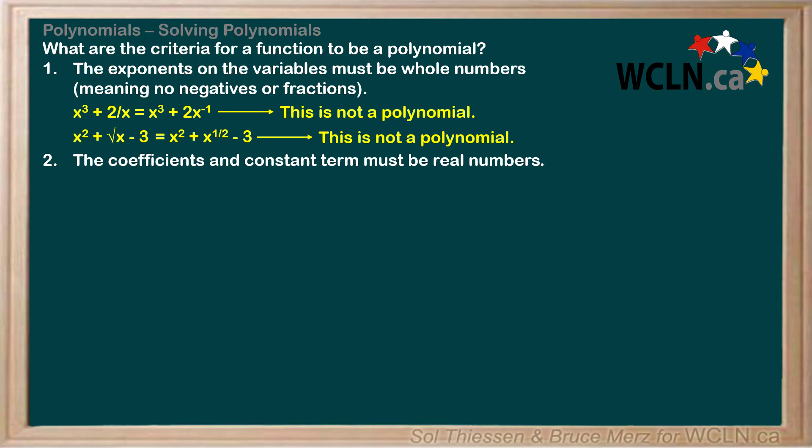The second criterion is that the coefficients and constant term must be real numbers. This just means that we can't have imaginary numbers in our polynomials, so functions that contain the square root of a negative are not allowed. Therefore, this is not a polynomial.